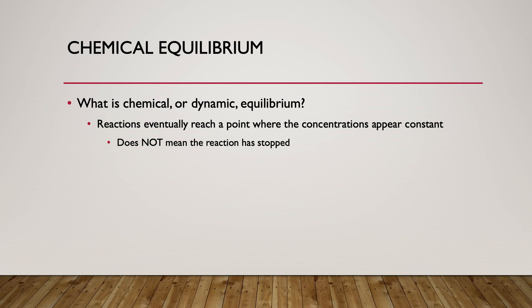There's a common misconception that the reaction has basically stopped happening once those concentrations are constant. But the reality is the reaction is still going — you just have a forward and reverse reaction both occurring at the same speed, which gives the appearance that concentrations are constant. The reaction never really stops; it's still constantly going forward and backwards, and that's what gives us this equilibrium state.